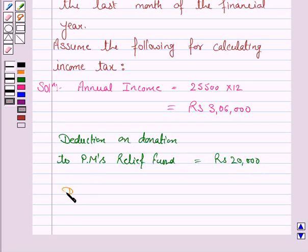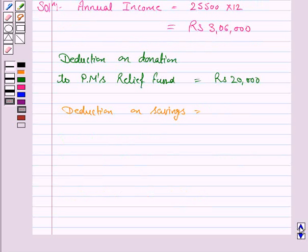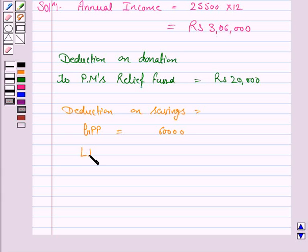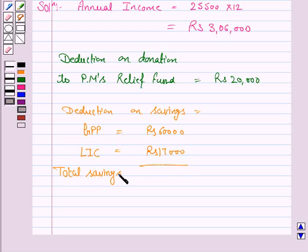The next step is to find the savings made by him — the reduction on savings. We are given that he pays Rs 5,000 per month in his GPF, so it is Rs 5,000 into 12, which is Rs 60,000 for GPF. He also pays an annual premium of Rs 17,000 for his LIC policy. So the total savings are Rs 77,000.